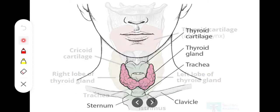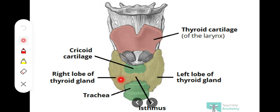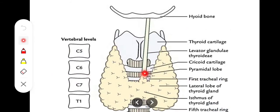Looking at the gross features, the thyroid gland consists of two lobes — the right and left lobe — connected by an isthmus. Sometimes we also have another lobe called the pyramidal lobe or accessory lobe of the thyroid gland. There is a muscle called the levator glandulae thyroideae extending from the pyramidal lobe all the way up to the hyoid bone.